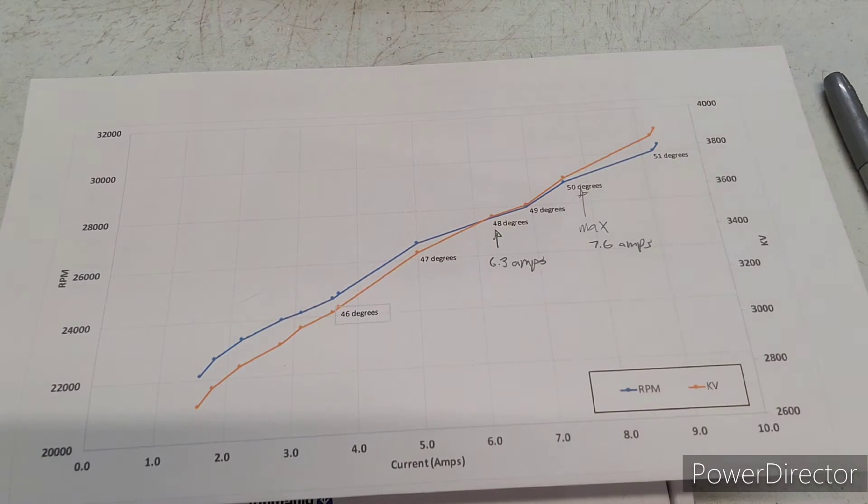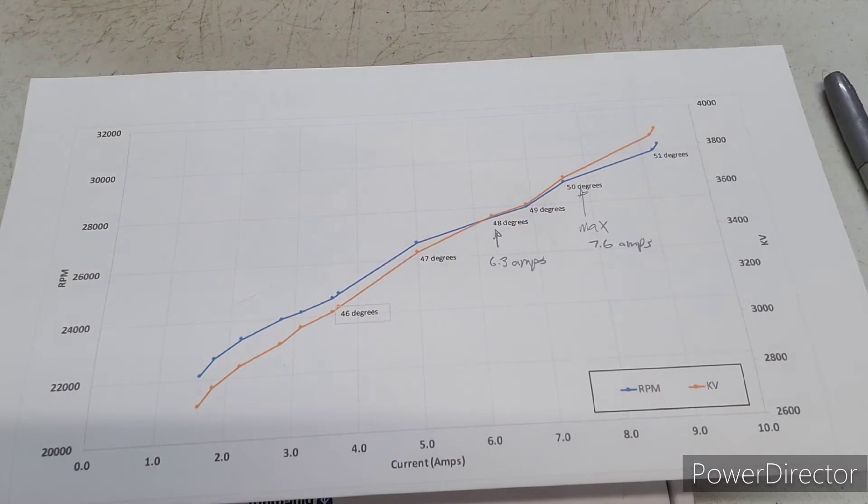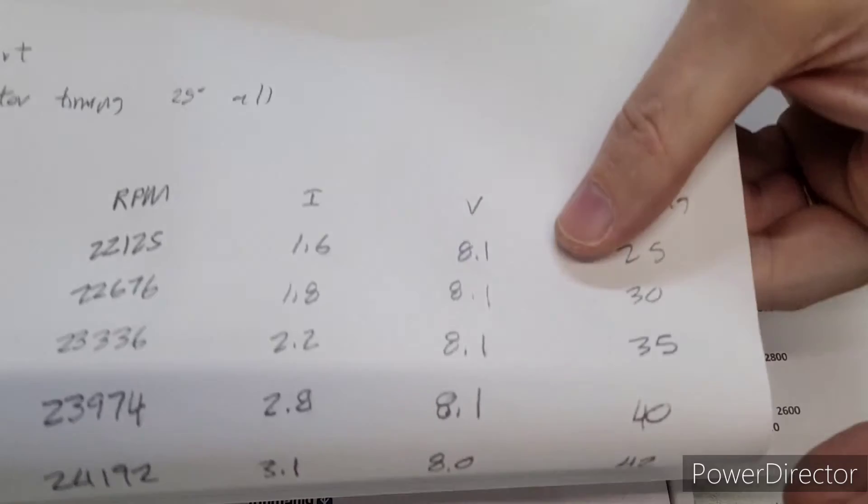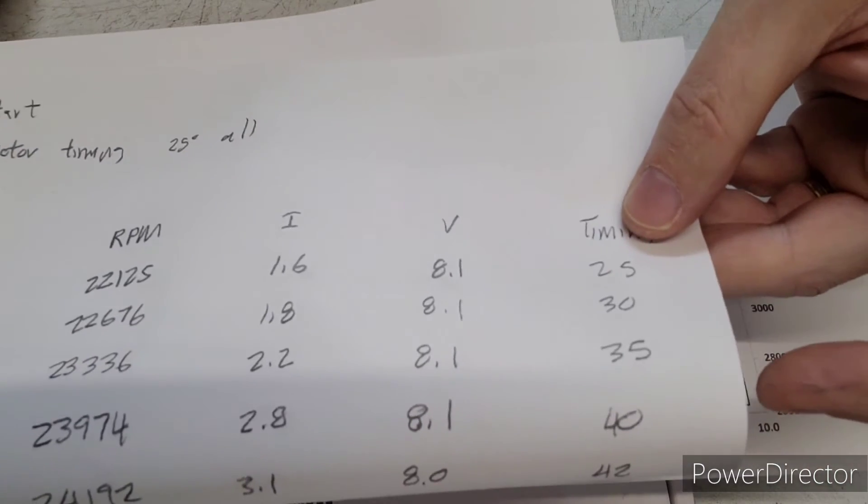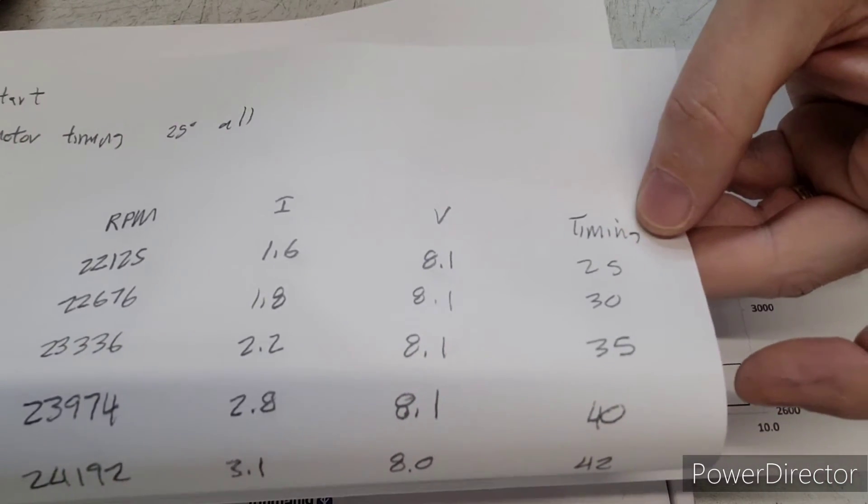All right. So I recorded all of the data. To do this, I like to just make a table. You can see really quick here. I made a table KV RPM current voltage and timing.